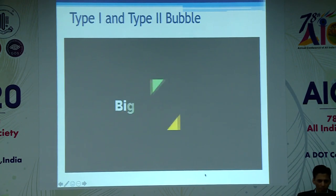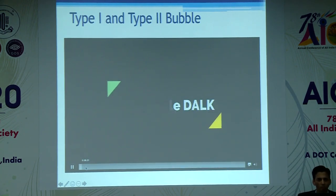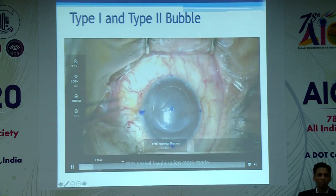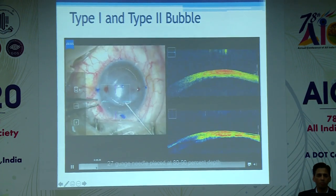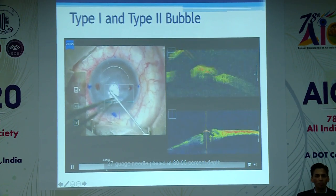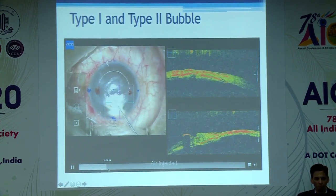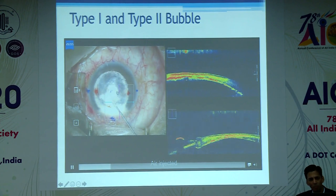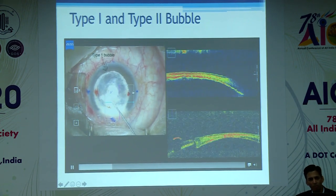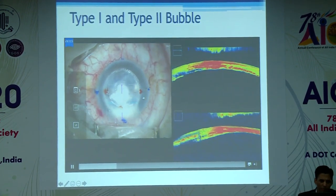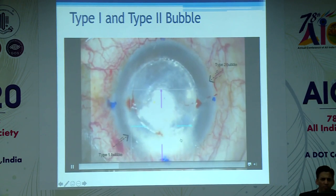Again, you can see the Descemet's membrane has fallen back, and as in the previous case, excision can be performed. Sometimes you can have both a type 1 and a type 2 bubble simultaneously, as seen in this case. An 80% thickness dissection was done using a 27-gauge needle at 80–90% depth. Notice you have a type 1 bubble expanding centrally and a type 2 bubble coming from the periphery — both are present and visible.